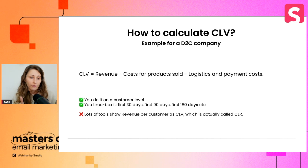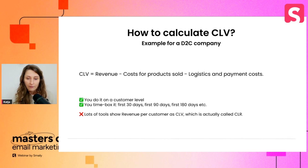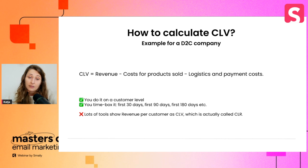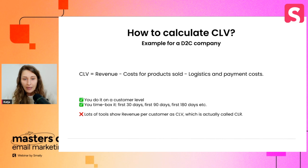If you don't time-box it, you may have customers who've been in your database for a very long time mixed with customers who've only been there for a month — you want to keep those separate. That's why CLV is calculated at 30, 90, and 180 days. Many tools calculate CLV by looking only at revenue, sometimes even revenue with tax. That's actually called CLR — customer lifetime revenue — and it's not the true customer lifetime value.